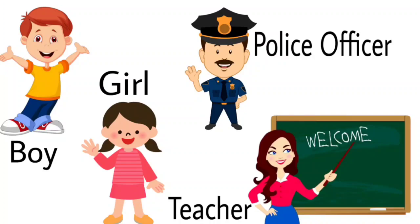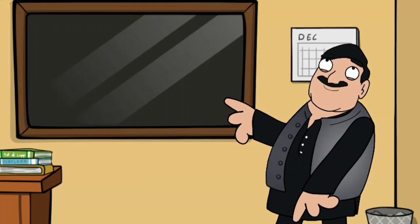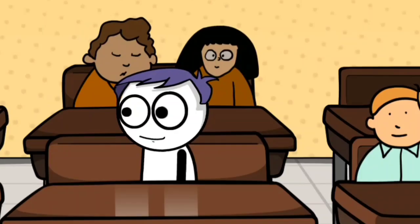Boy, girl, teacher, police officer. These are names of different people. They are nouns too. Tiger, dolphin, dog, spider. These are names of animals. And they are nouns.